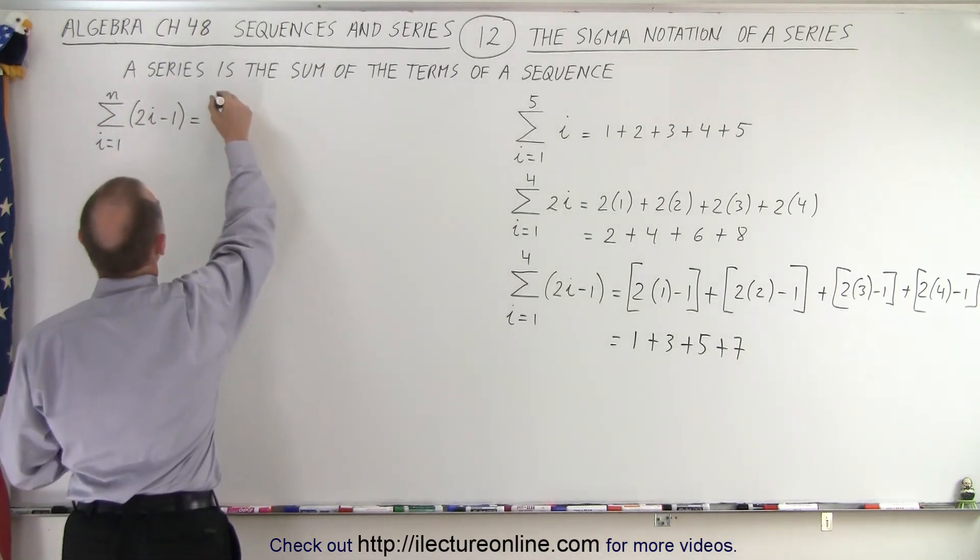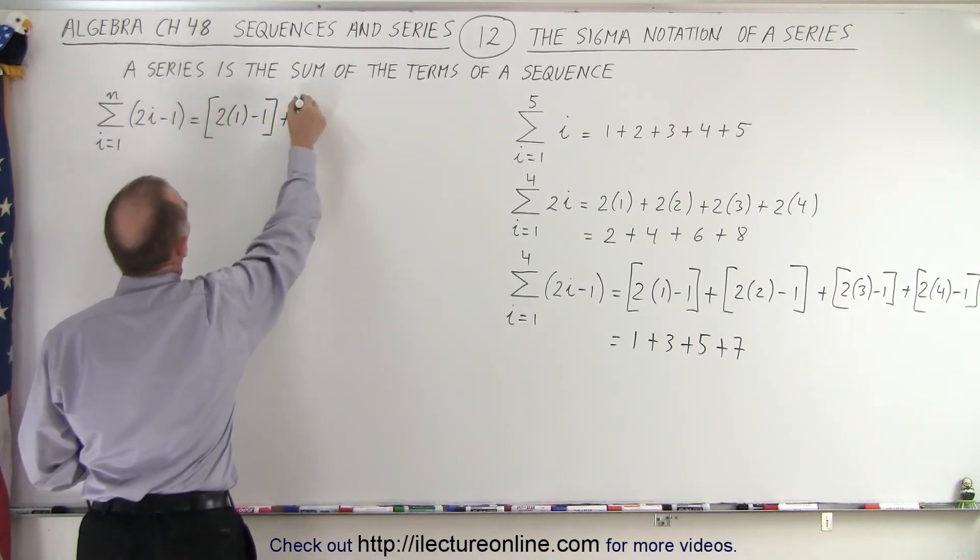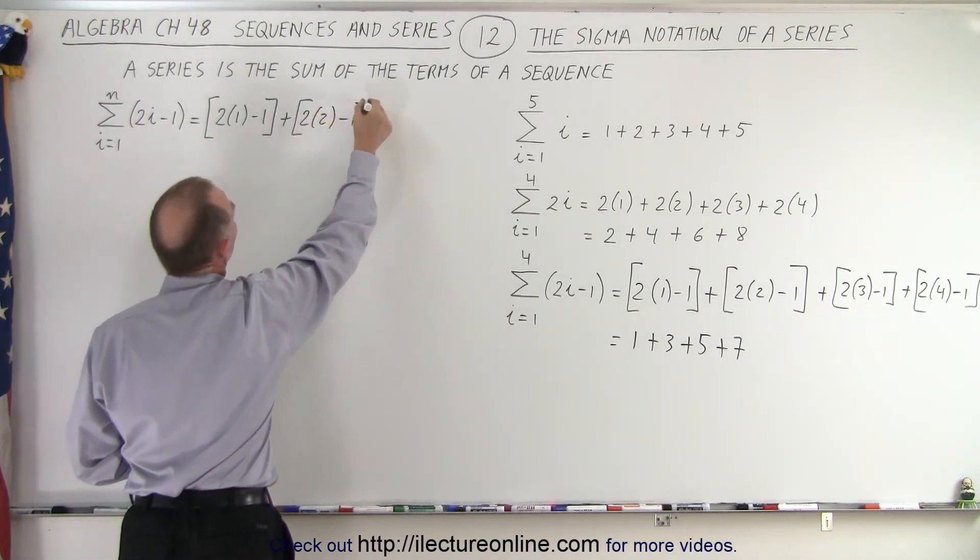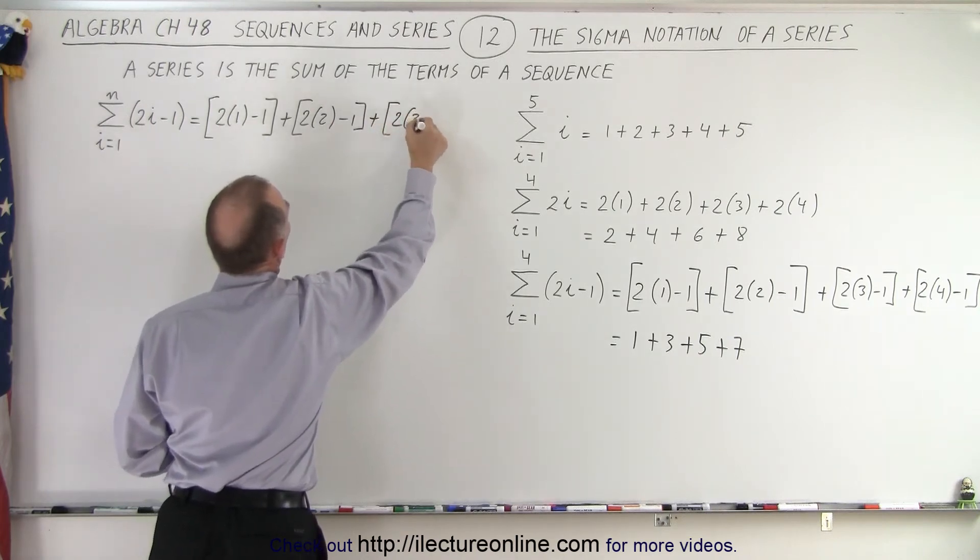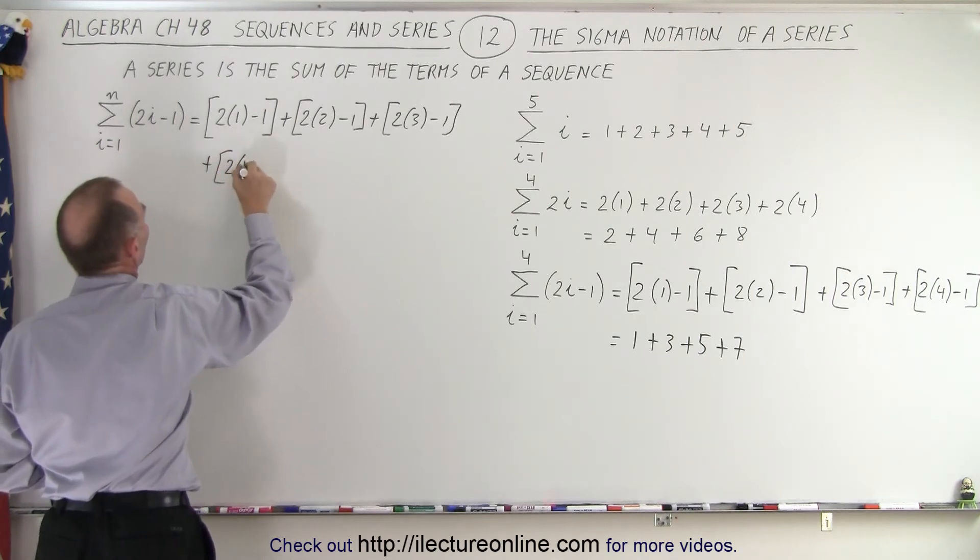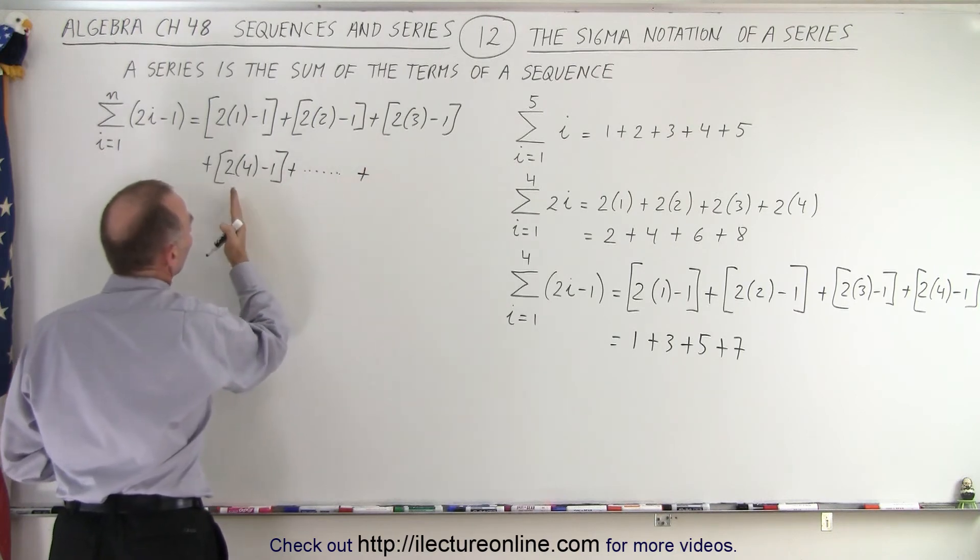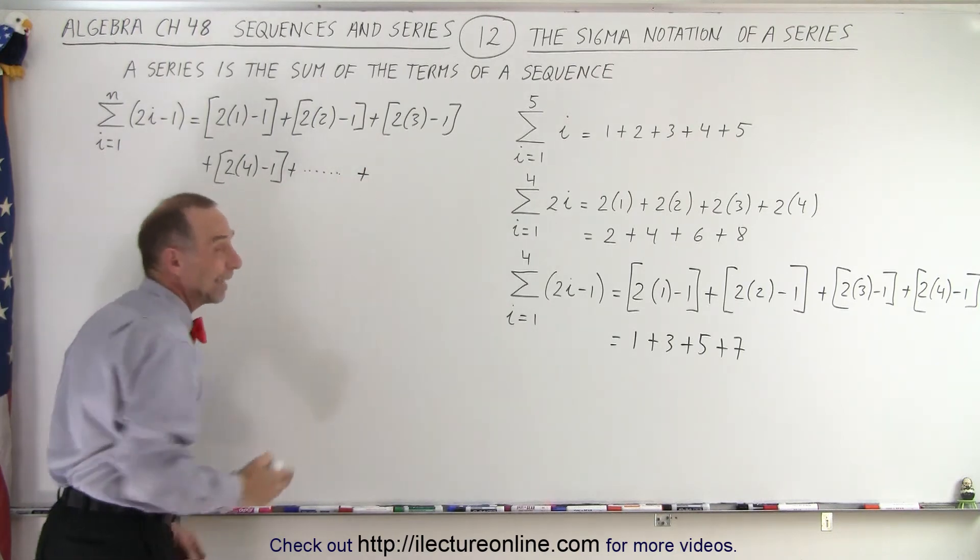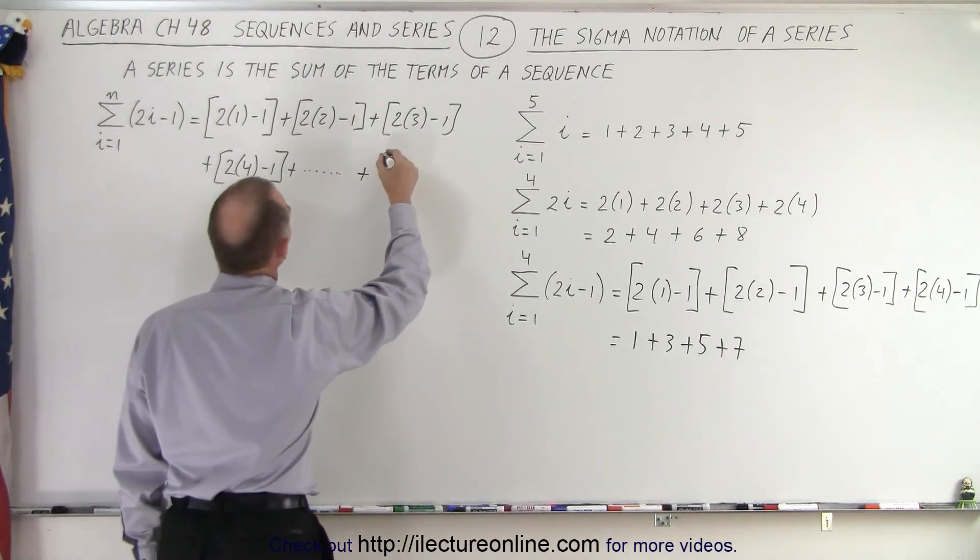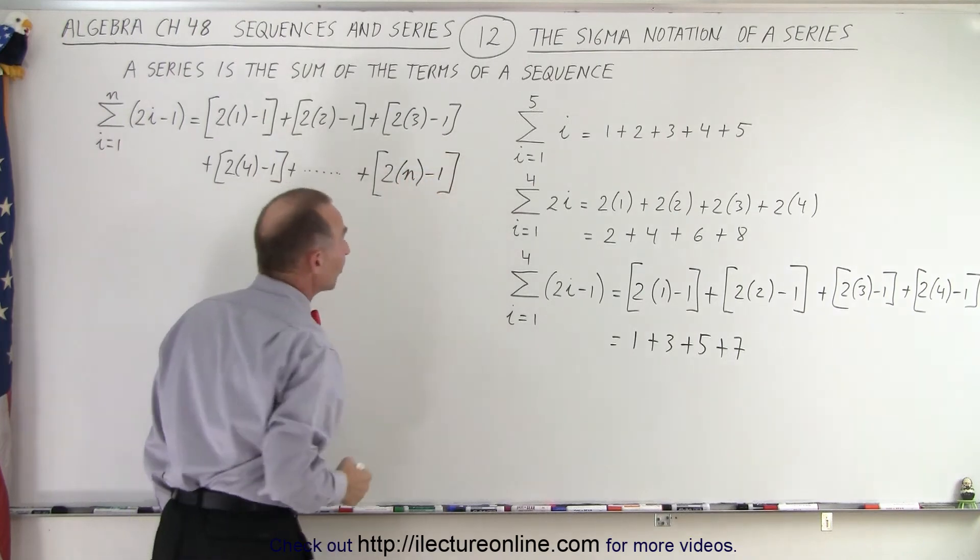So this would be 2 times 1 minus 1 plus and looks exactly the same as that 2 times 2 minus 1 plus 2 times 3 minus 1 plus 2 times 4 minus 1 plus dot dot dot dot plus. With other words we just keep doing that until we reach the last value for i which can be any number. It'll be n so this will be 2 times n minus 1 and n of course can be any number.